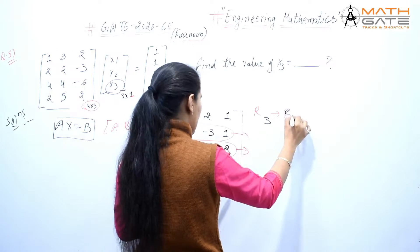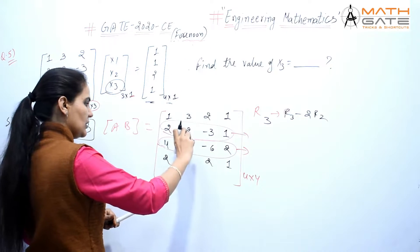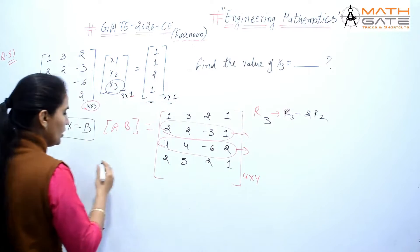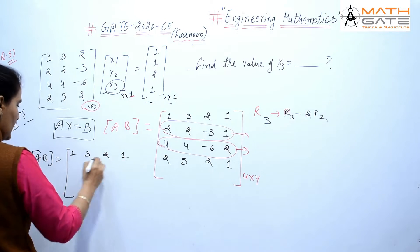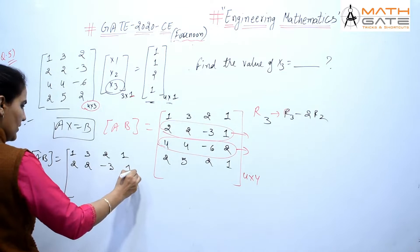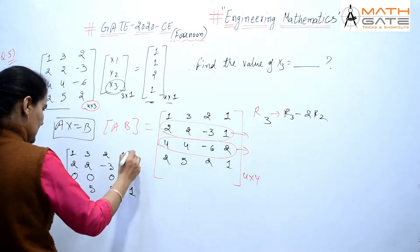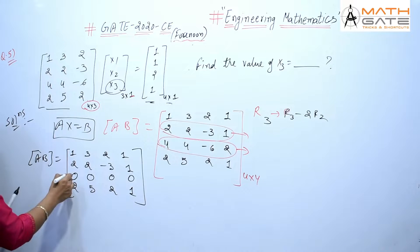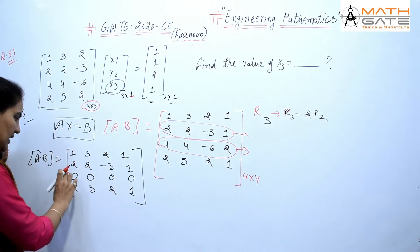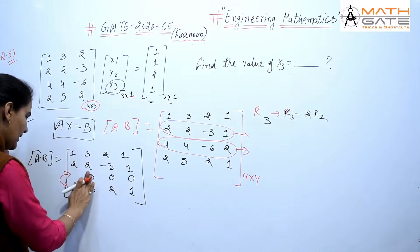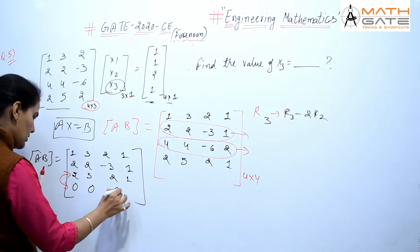After applying R3 → R3 - 2R2, the matrix becomes: row 1: 1, 3, 2 | 1; row 2: 2, 2, -3 | 1; row 3: 0, 0, 0 | 0; row 4: 2, 5, 2 | 1. To convert to row echelon form where zeros increase in order, we swap row 3 and row 4, giving us: row 3: 2, 5, 2 | 1; row 4: 0, 0, 0 | 0.